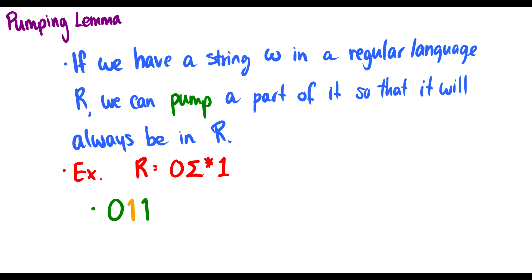So what is the pumping lemma? Well if we have a string w in a regular language R, we can pump a part of it so that it will always be in R. So if R is zero sigma-star one, let's say we have a string that follows this pattern — zero one one. What we can do is take this middle part, one, and pump it up. Pumping really just means repeating a part of it.